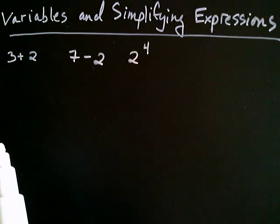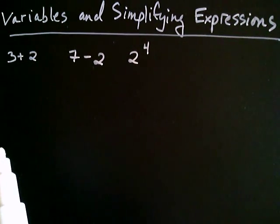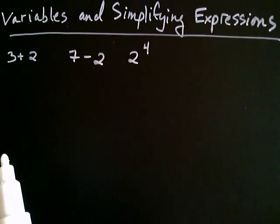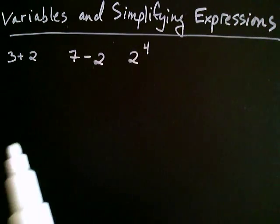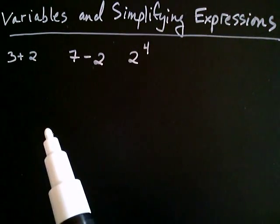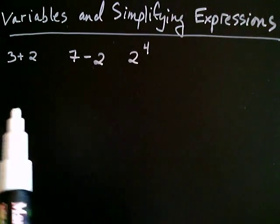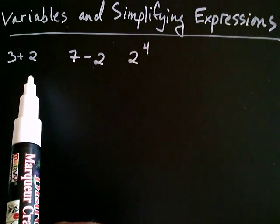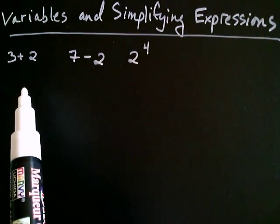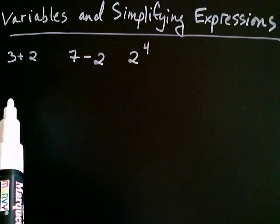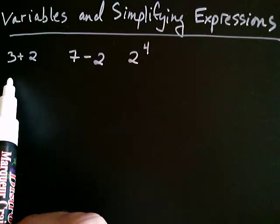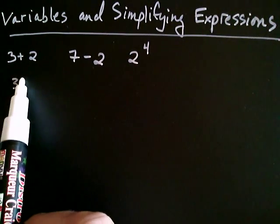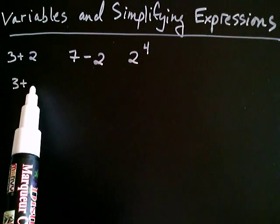It just so happens to occur that in algebra, lots of times there are situations where you don't know the value of a number but you would still like to perform or combine it with other numbers using operations. Like for example, I may not know the value of a number, or there might be a number whose value I don't know, but I may still want to add it to three. So here's what we write in that situation: three plus the unknown number.